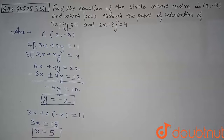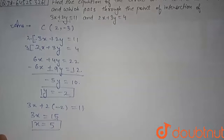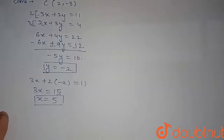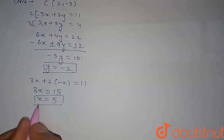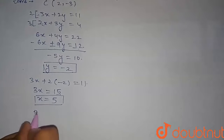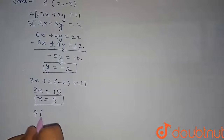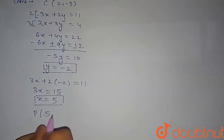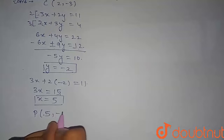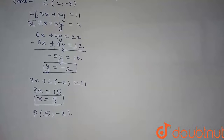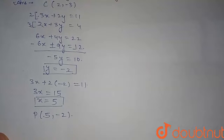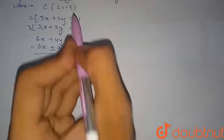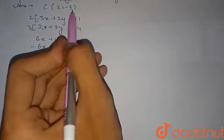So x = 5 is the x-coordinate of the point through which the circle passes. Our point P is (5, -2), and the center of the circle is already given as C = (2, -3).